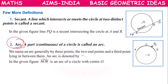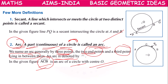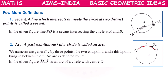Next we have a definition called arc. Arc means a continuous part of a circle is called an arc. Arc is generally named by three points: two will be end points and the third point will be lying between them on the arc. Arc ACB is an arc of the circle with center O. This part of the circle from one point to another is considered as an arc.